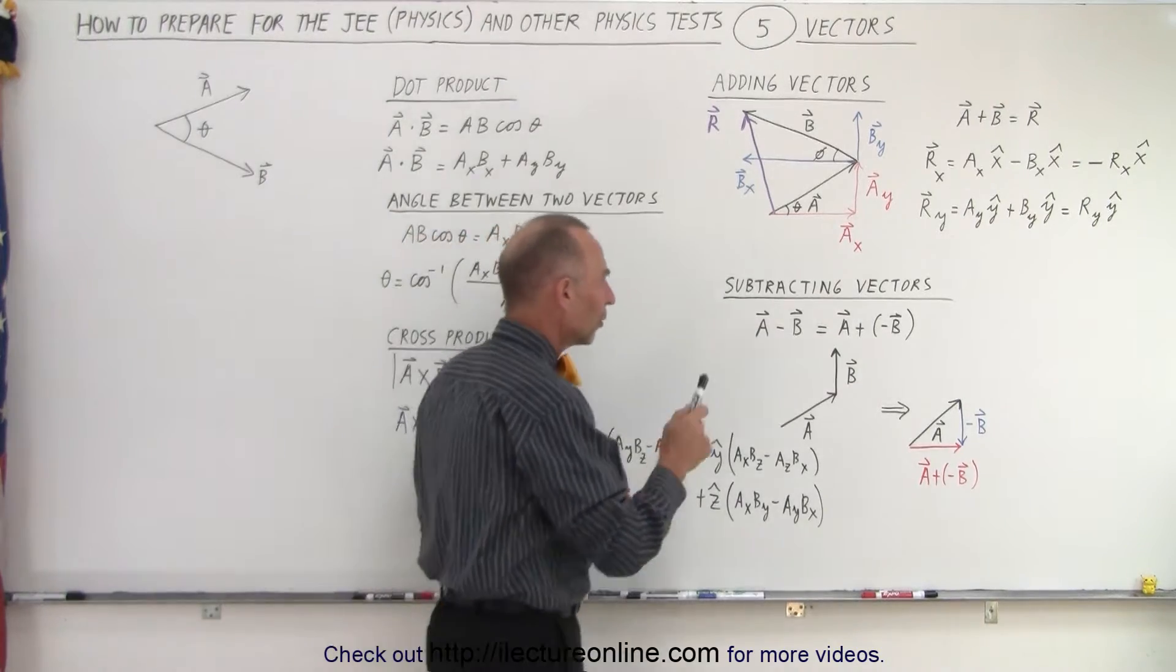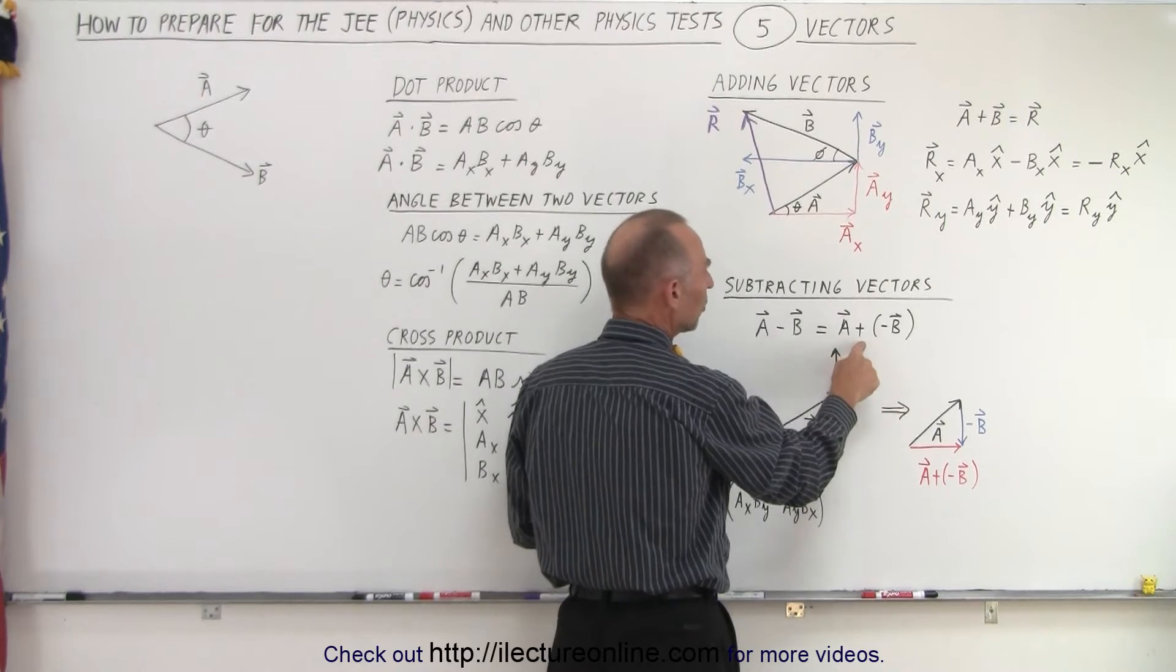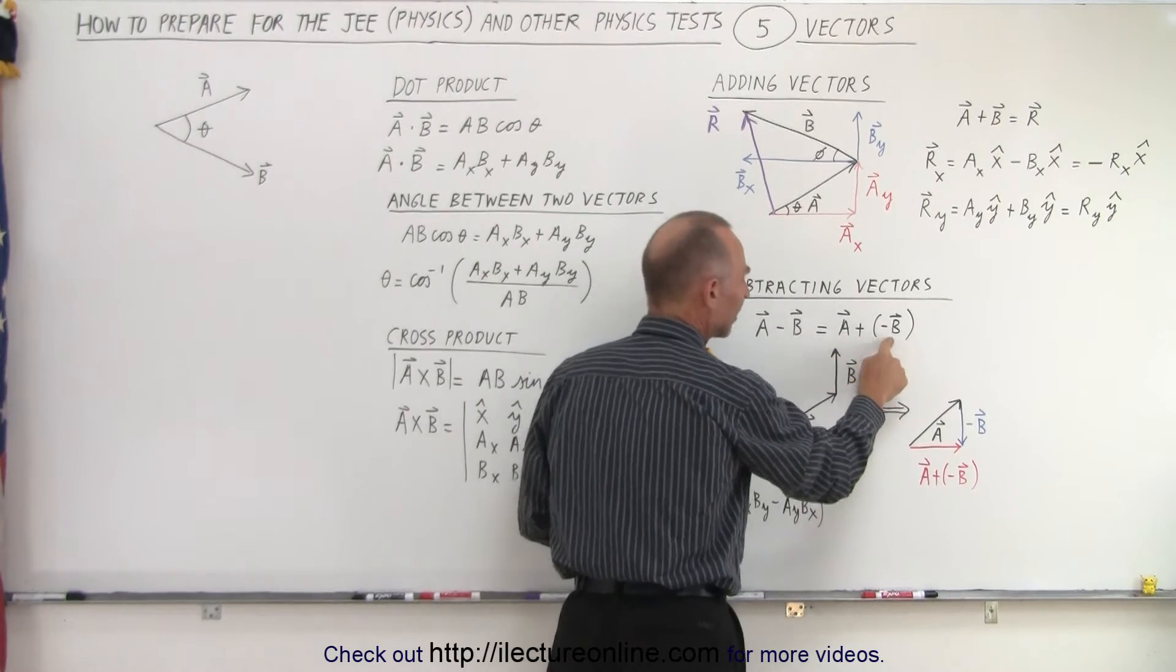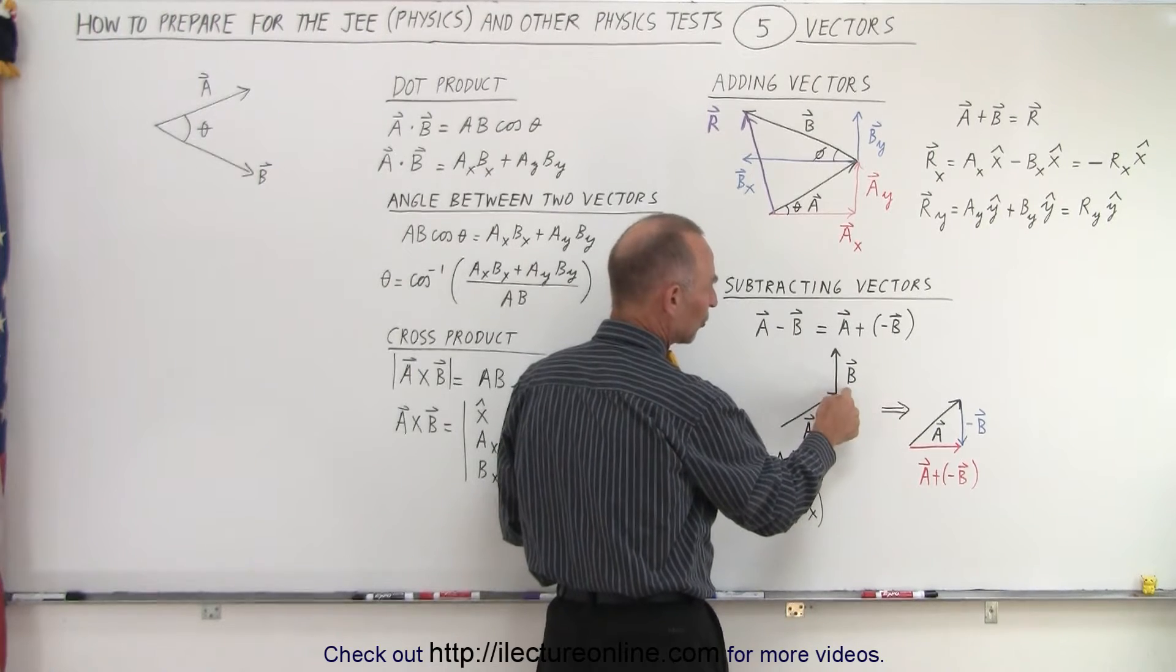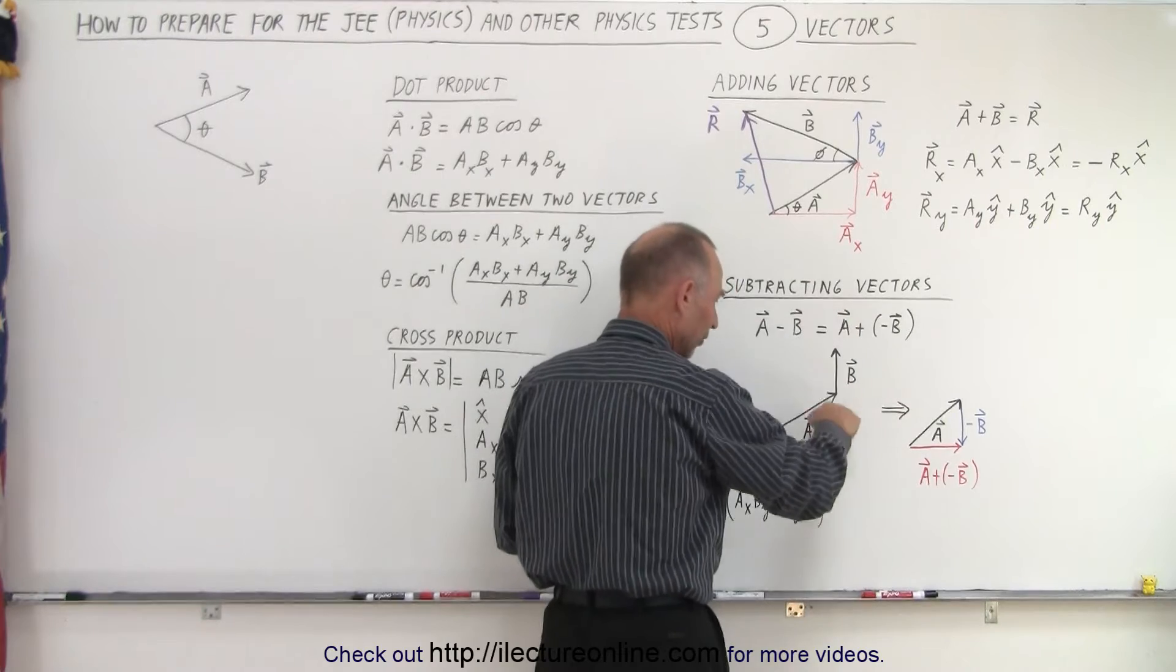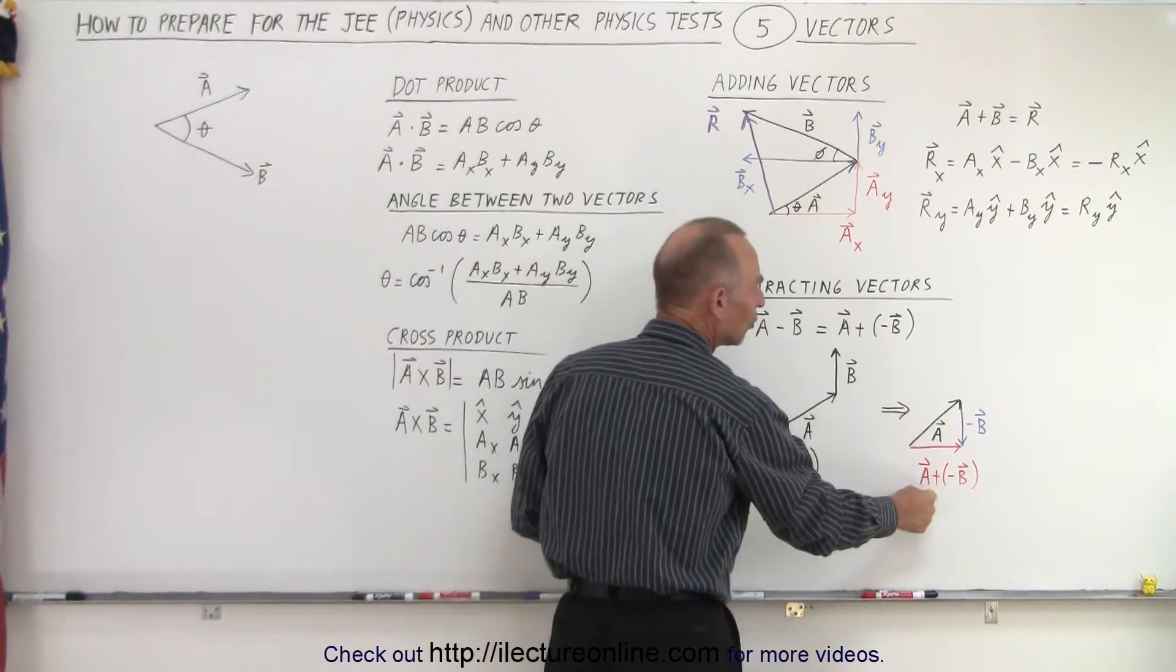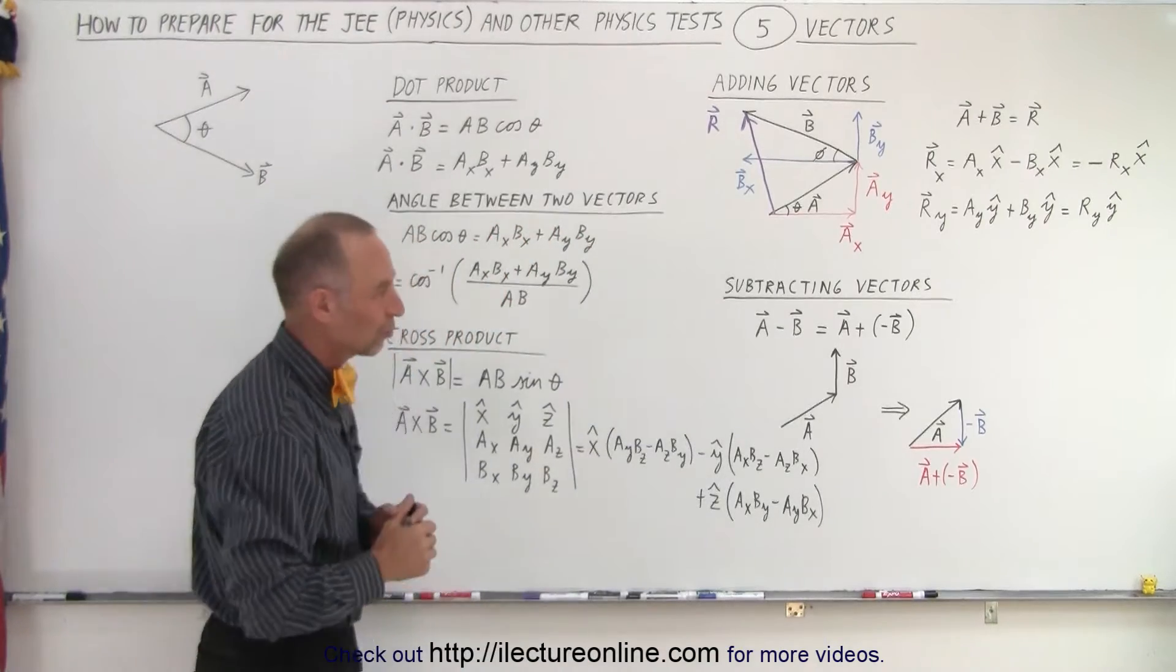If you're going to subtract vectors, the best thing to do is to convert it to an addition. You're going to add the negative of the vector. So if you have A and B here, then what you do is you convert B to a negative B, simply flipping it over, pointing in a different direction. And then you add A to the negative B to get the resultant of the vector subtraction.